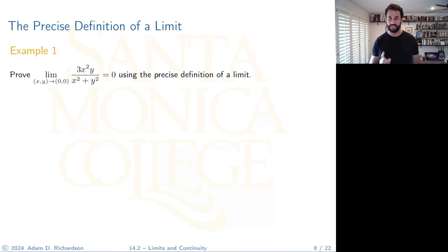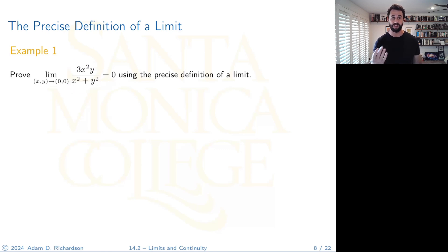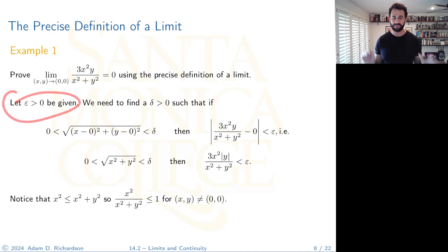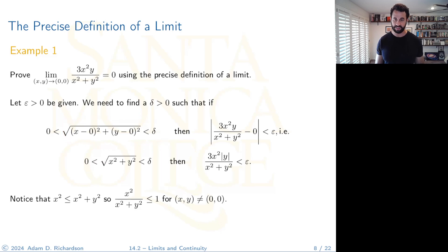Let's prove that the limit as (x, y) approaches (0, 0) of this function equals zero using the precise definition of a limit. From calc one, you start with an arbitrarily given epsilon and find a delta that depends on epsilon. So: suppose epsilon is given. We need to find a delta > 0 such that if the distance from (x, y) to (0, 0) is less than delta, then the absolute value of our function minus zero is less than epsilon.